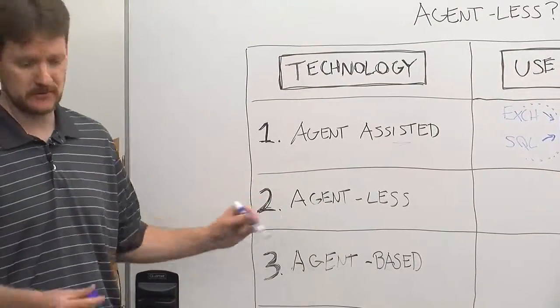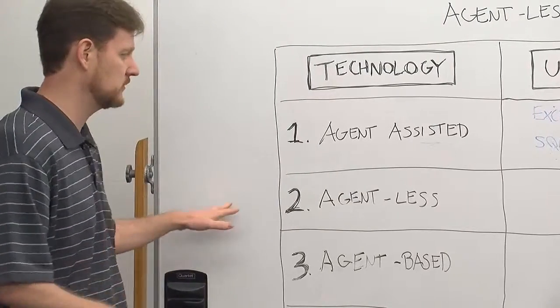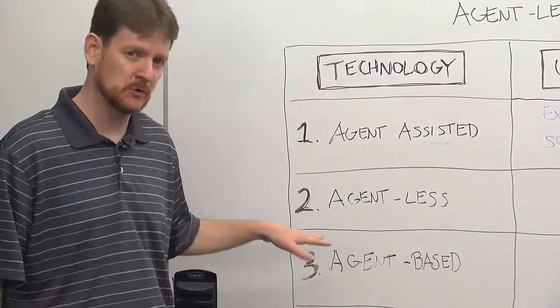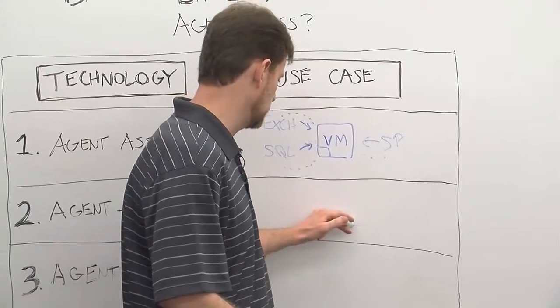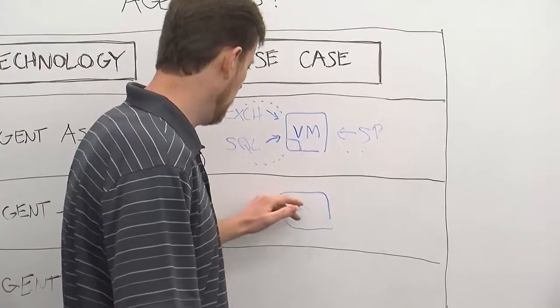Next, you have true agentless. In agentless configurations, this is also for virtual machines. So we again draw our virtual machine icon over here. However, in this case, there is likely no application in the virtual machine.